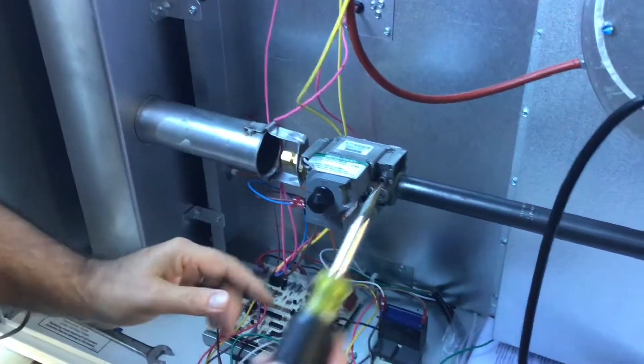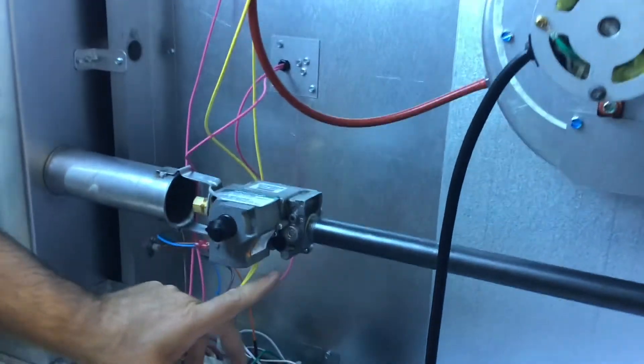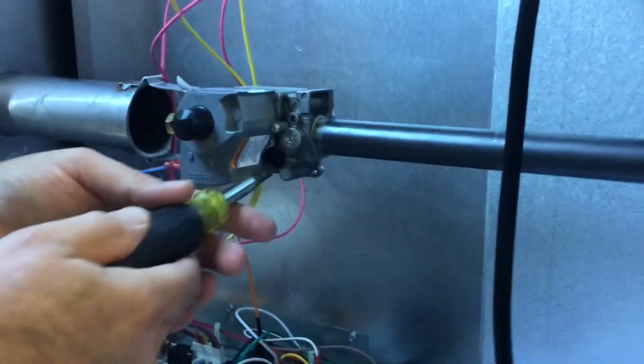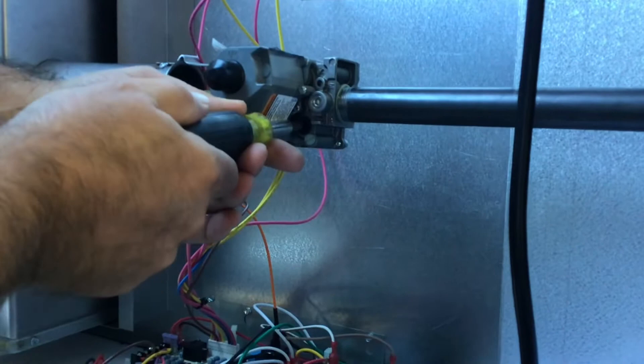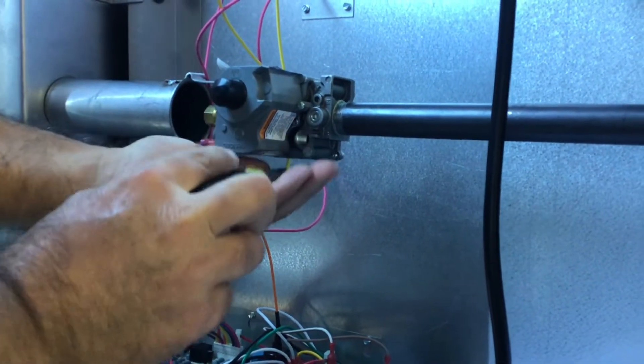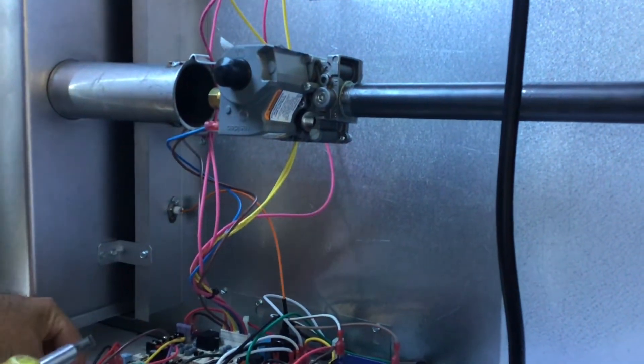Then what we're going to do is on the gas valve, we're going to remove the cap where we adjust the gas pressure. Gas pressure cap is black on the propane.